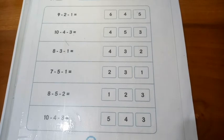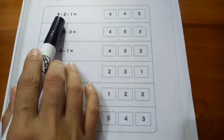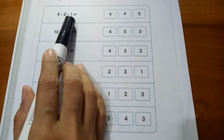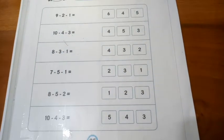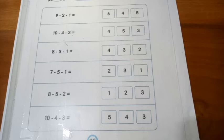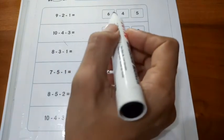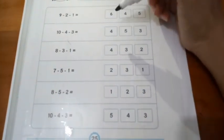So nine minus two minus one equals six. You have to circle the correct answer, so circle six.